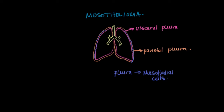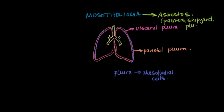Mesothelioma is a cancer of mesothelial cells. The reason we consider it an occupational lung disease is because mesothelioma is related to asbestos exposure. Asbestos exposure occurs with many types of occupations such as painters, shipyard workers, and plumbers. Unfortunately, mesothelioma has a very high associated mortality. Those are two types of occupational lung diseases, and next we'll consider some other types.